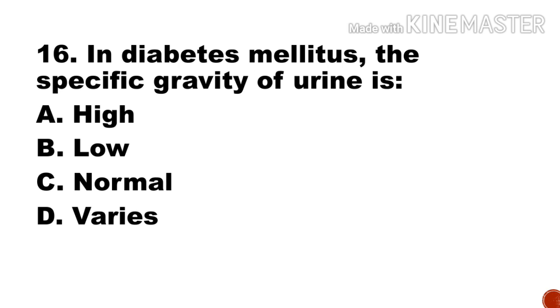Next question: In diabetes mellitus, the specific gravity of urine is — a) high, b) low, c) normal, d) varies. Option a, high, is the right answer.